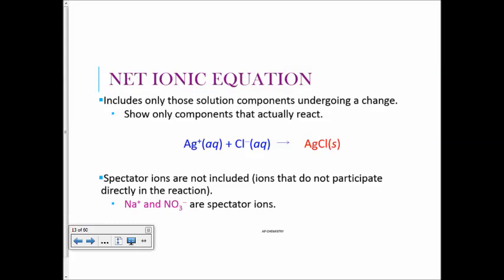The net ionic equation only shows the components — ions — that are actually reacting. See how much shorter the net ionic is: you're just showing silver and chloride reacting to make silver chloride. The Na⁺ and NO₃⁻ are the spectators — they don't participate in the reaction and float between the water molecules. When working a problem like this, you need to have those solubility rules out so you can figure out who's going to precipitate.